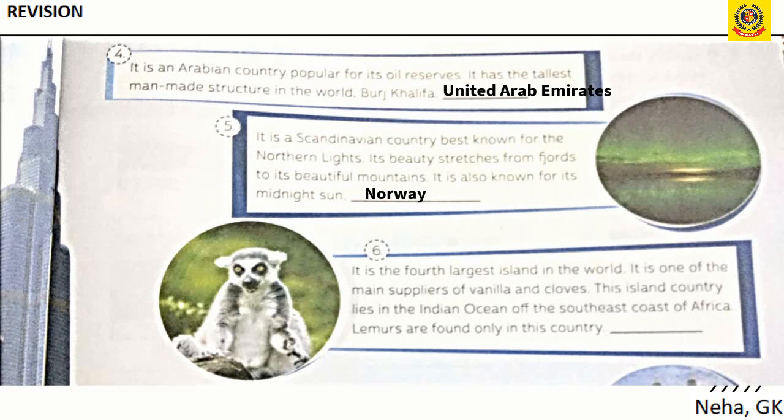Sixth, the fourth largest island in the world, a main supplier of vanilla and cloves, located in the Indian Ocean off the southeast coast of Africa, where lemurs are found only in this country — the answer is Madagascar.